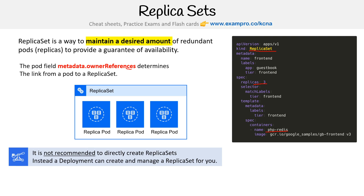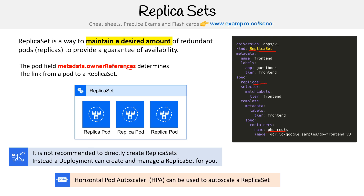Similarly, if you have a replica set with three pods and you delete your pods, your pods might reappear. Horizontal Pod Autoscaler can be used to auto scale replica sets, and we'll talk about that when we get to HPA.